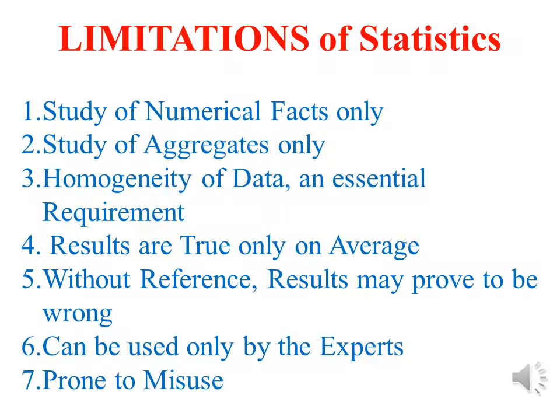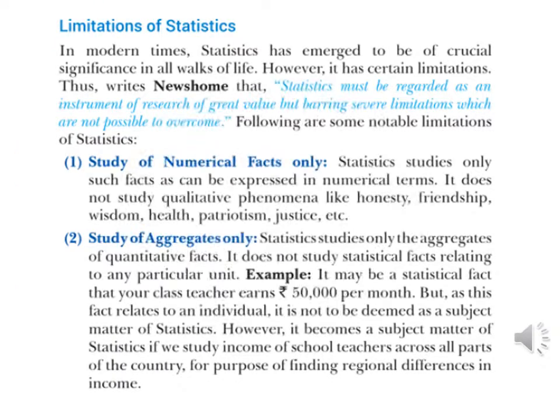Limitations of statistics — we have seven limitations. First, it studies numerical facts only. Second, it studies aggregates only. Third, homogeneity of data is an essential requirement. Fourth, results are true only on average. Fifth, without reference, results may prove to be wrong. Sixth, it can be used only by experts. Seventh, prone to misuse. In modern times, statistics has emerged as crucial in all walks of life, but it has certain limitations.